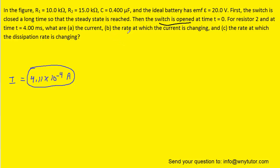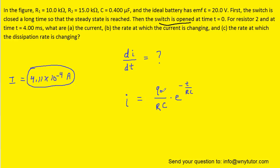For part B, we are asked to calculate the rate at which the current is changing, symbolically di/dt. To solve for that, we use an equation from this chapter that relates current to the original charge on the capacitor, the resistance, the capacitance, and time — for a discharging capacitor whose current is exponentially decreasing. We take the derivative with respect to time on both sides. The right side retains the constant multiple; when taking the derivative of the exponential, we recopy the exponential and multiply by the derivative of the exponent, which is negative 1 over RC.